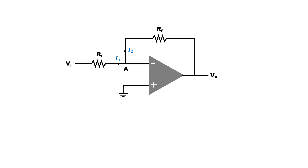Let's talk about how to apply Kirchhoff's node analysis on the circuit of an operational amplifier. When a voltage is applied to the input, a current I1 flows through resistance R1. But due to the high input impedance of the operational amplifier, it starts to flow through resistance RF at node point A. The current entering at node point A must equal the outgoing current, so I1 equals I2. The value of I1 equals the difference of the applied voltage at both terminals of R1 divided by R1. Similarly, I2 equals the difference of the applied voltage at both terminals of RF divided by RF.